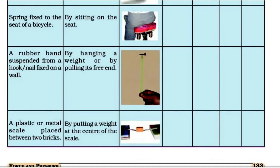Third case: a rubber band suspended from a hook or nail fixed on a wall. By hanging a weight or pulling it, we apply force. Does this change its state of motion? No. It changes its shape — the rubber band stretches.